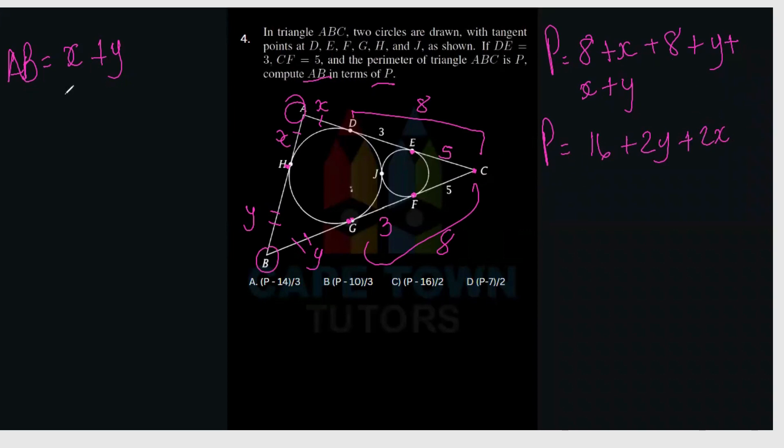So we can add the like terms together. You're going to have 8 plus 8 which is 16, X plus X which is 2X, and Y plus Y which is 2Y. So we do know that AB is X plus Y. So how can we get X and Y together and replace it with AB? What you can do is take out a common factor between these two. Let's take out a common factor of 2. So if you take out a common factor of 2, we're just going to be left with X plus Y. So we've taken the common factor of 2 and you just have X plus Y.